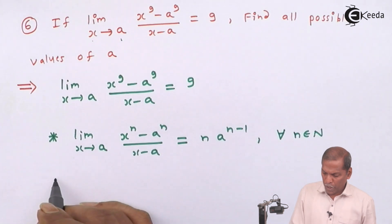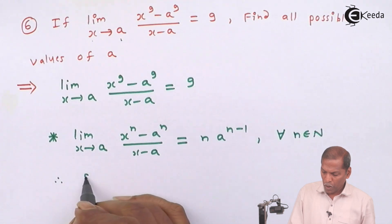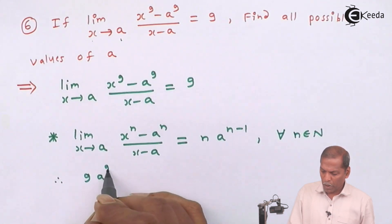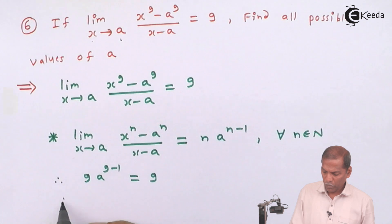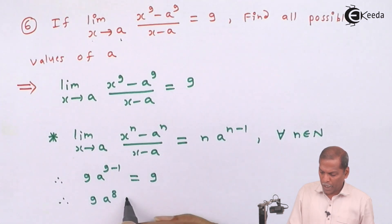So similarly here we have 9 into a raised to 9 minus 1, and that equals 9. It means 9 into a raised to 8 is equal to 9.